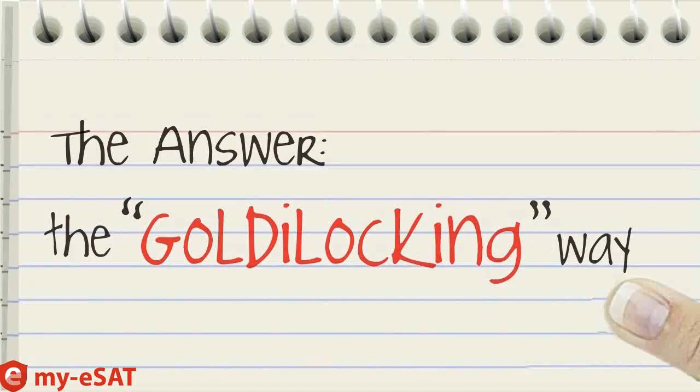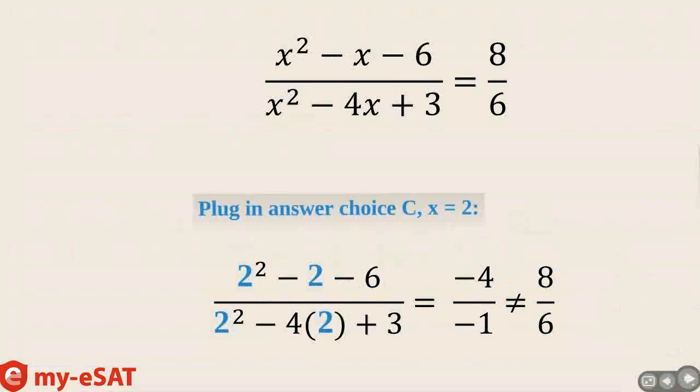This time, instead of solving anything, we're going to Goldilocks answer choice C. So let's plug in 2 as x in the equation. Solving it out, we see that this equals negative 4 over negative 1, or 4.